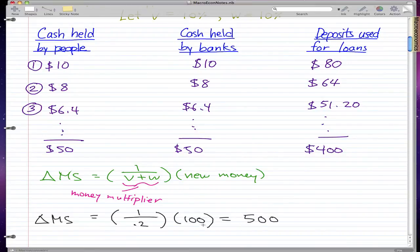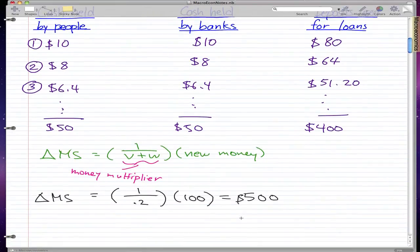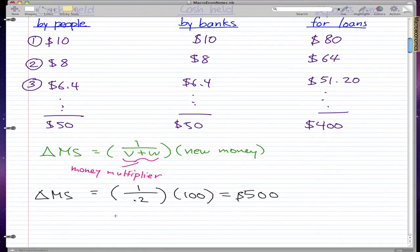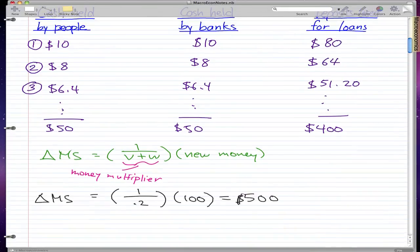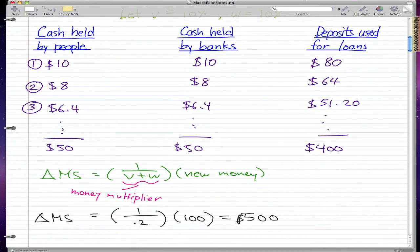So the change in money supply is $500. We took $100 of new money and got $500. We pretty much created through loans—because remember I told you in the last video that new money could be created through loans—we created $500 from that $100.